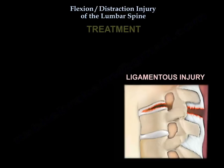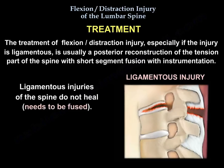The treatment of flexion distraction injury, especially if the injury is ligamentous, is usually a posterior reconstruction of the tension band part of the spine with short segment fusion with instrumentation. Ligamentous injuries of the spine do not heal — they need to be fused.